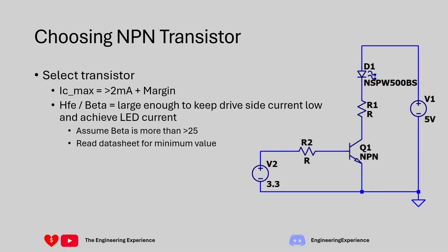Next, select the transistor. There are two requirements: the transistor must handle more than 2 milliamps plus some margin, and it must have a large enough beta so we're not drawing too much current from the source. If it's a microcontroller that can provide up to 1 milliamp, that sets a limitation on the minimum beta required. But driving only 2 milliamps, this shouldn't be a major issue.